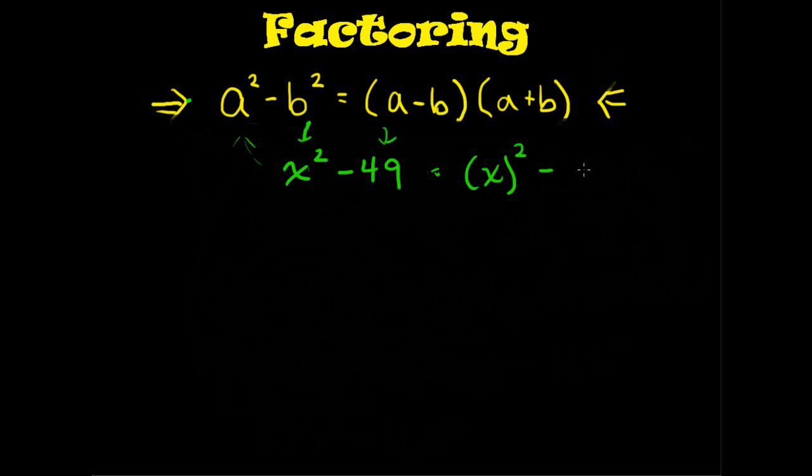You notice there are two squares here, the x squared and the 49. We're gonna adjust it to look more like this. So it's gonna be x squared minus 7 squared. Now we know this is a, and we know this is b. So just plug that into our identity.